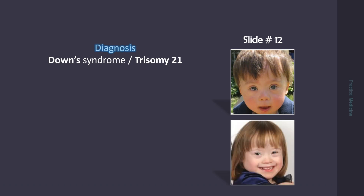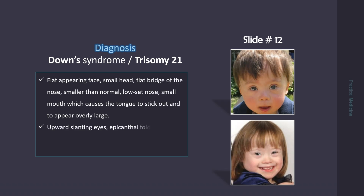These children are having trisomy 21. Notice flat appearing face, small head, flat bridge of the nose, smaller than normal low-set nose, small mouth, which causes the tongue to stick out and to appear overly large. See also upward slanting eyes, epicanthal fold, rounded cheeks, and small misshapen ears.